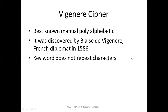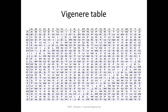Now, the Vigenère cipher was discovered by a French diplomat in 1586. Unlike the Playfair cipher which has a random distribution of alphabets in its table, the Vigenère cipher uses a simple 26x26 matrix: the first row is A to Z, the second row starts with B and wraps around to A, the third with C to B, and so on for all 26 rows.